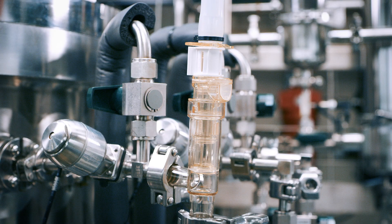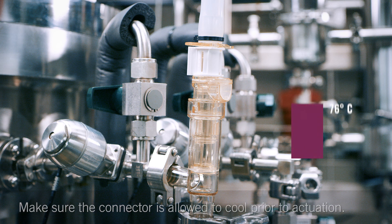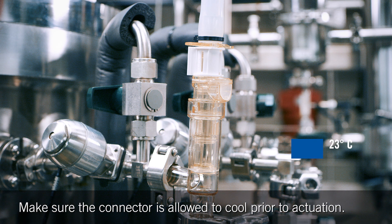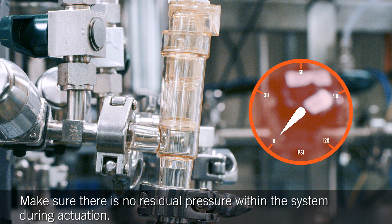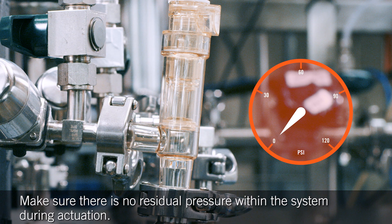Prior to actuating the Steam Through connector from the steam position to the flow position, make sure the connector has cooled back to room temperature. It is important to make sure there is no pressure built up within the steam condensate path during actuation of the connector to the flow position.